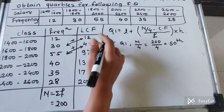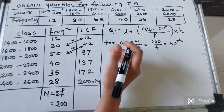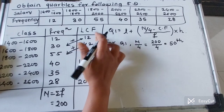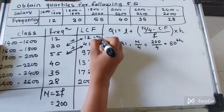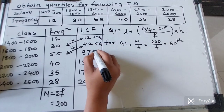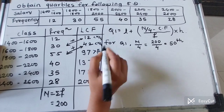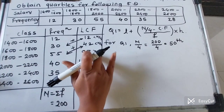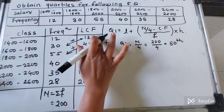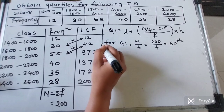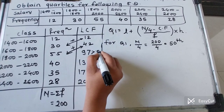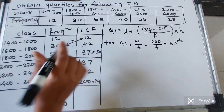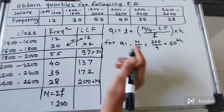We check where the 50th observation falls. The LCF of 12 is less than 50, 42 is less than 50, but 97 exceeds 50 for the first time. So the class 1800–2000 is the Q1 class.